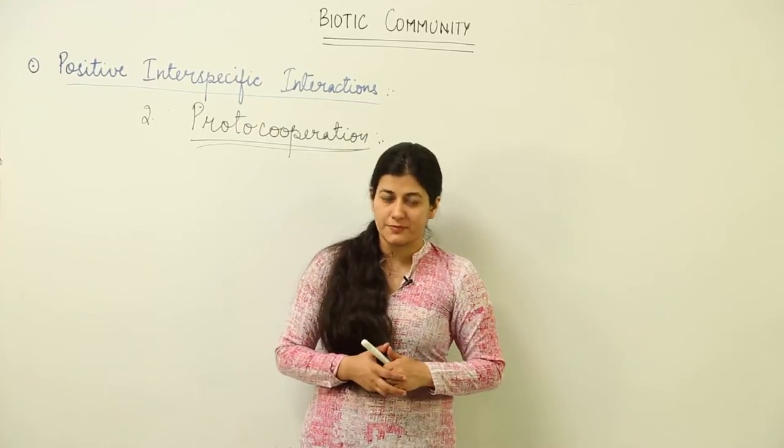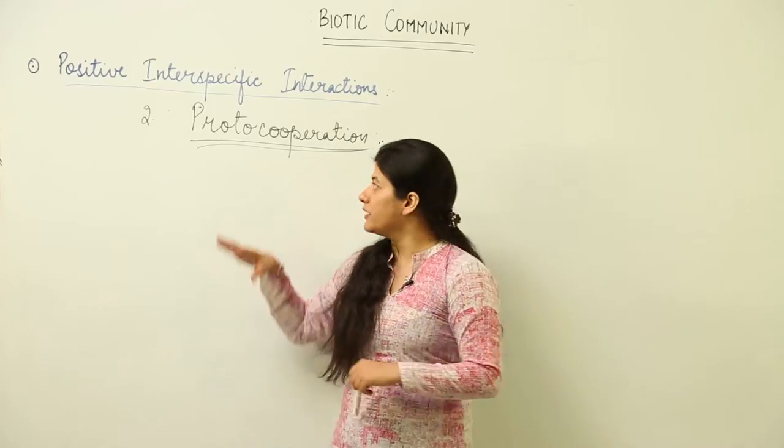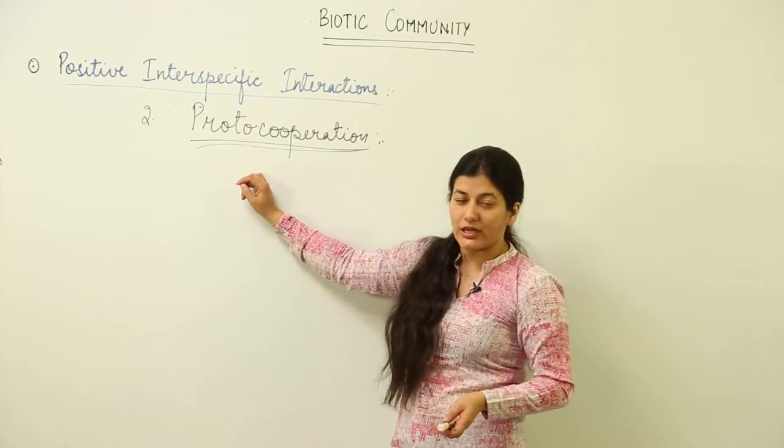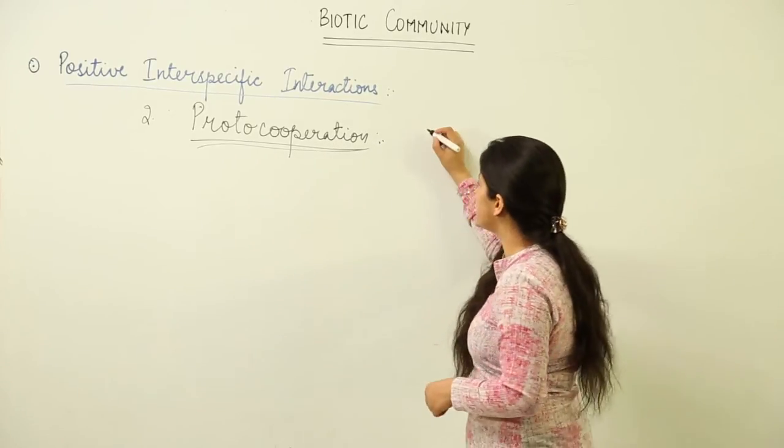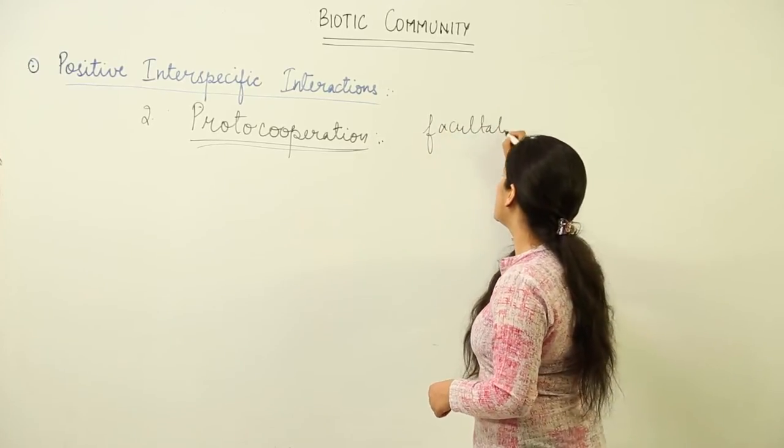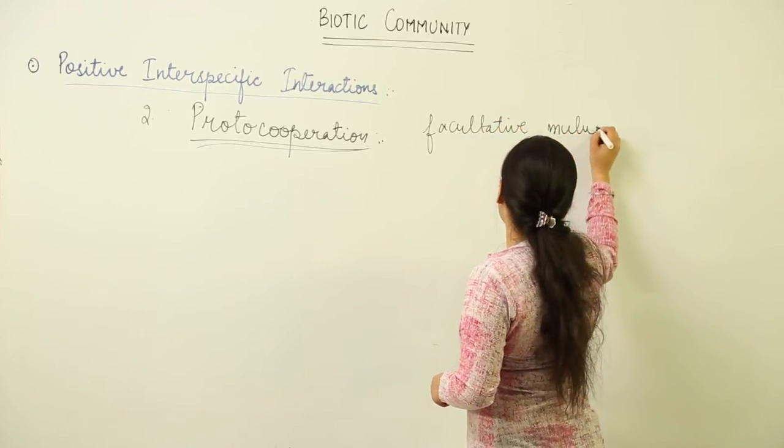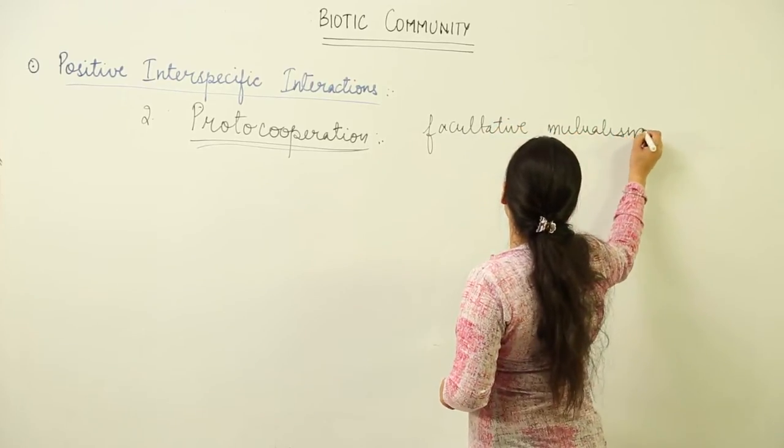The next type of species interaction, interspecific interaction under the positive grouping, is proto-cooperation. The other name for proto-cooperation is facultative mutualism. From the word facultative, you can understand that it is optional, not mandatory.